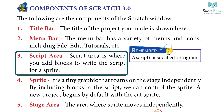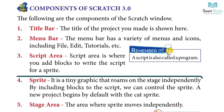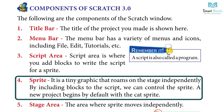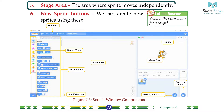Three: Script Area — this is where you add blocks to write the script for a sprite. Four: Sprite — a sprite is a tiny graphic that roams on the stage independently. By including blocks in the script, we can control the sprite. A new project begins by default with the cat sprite.